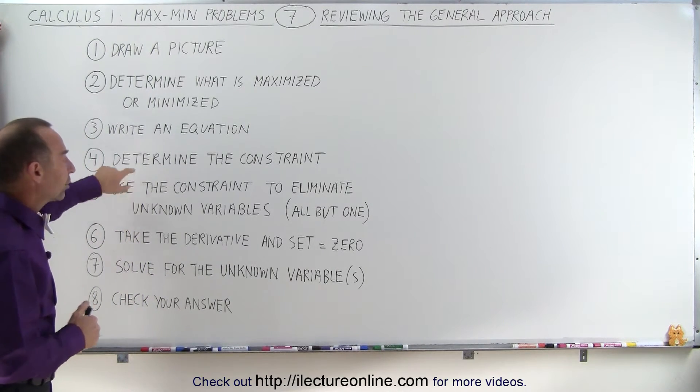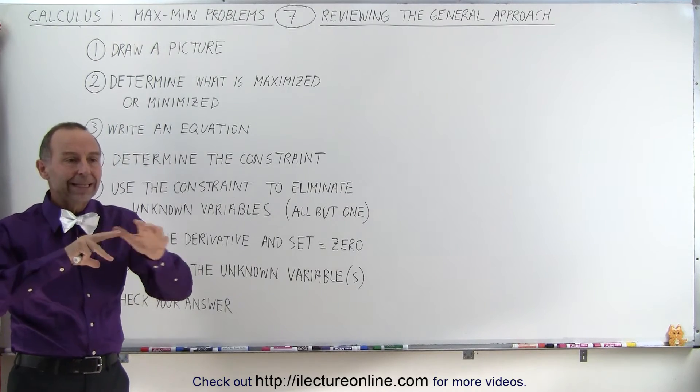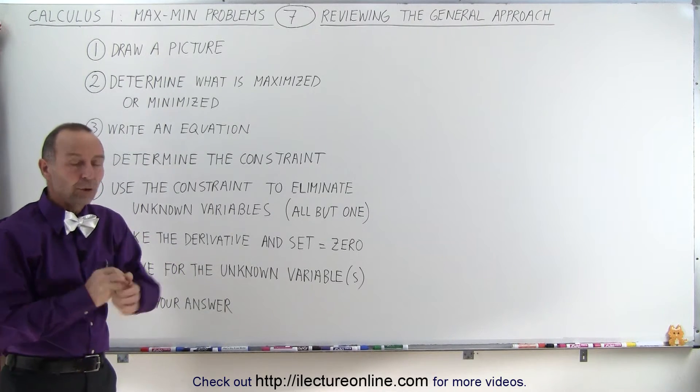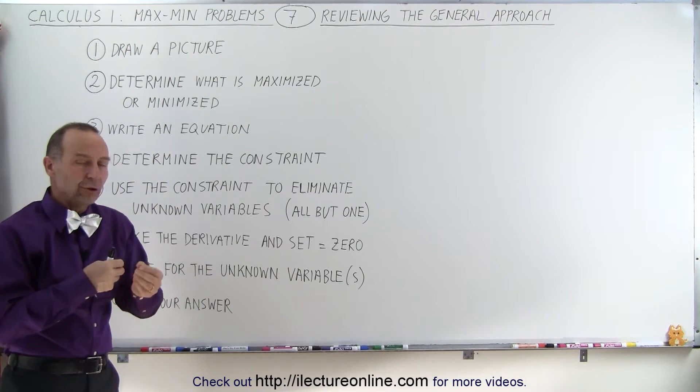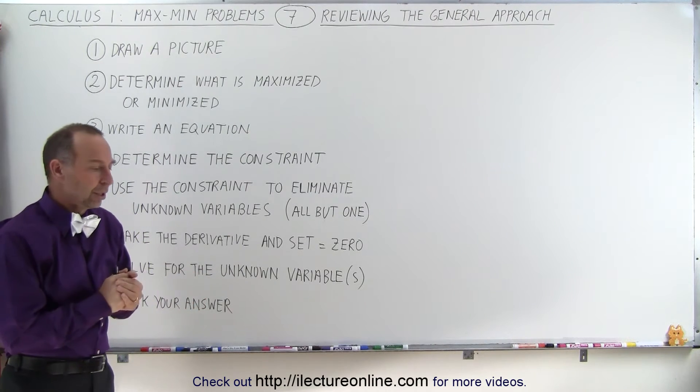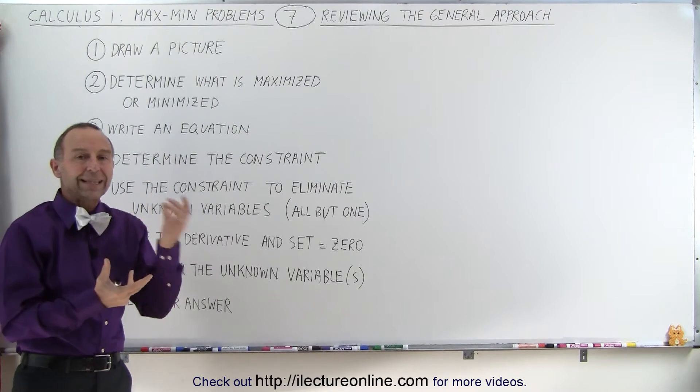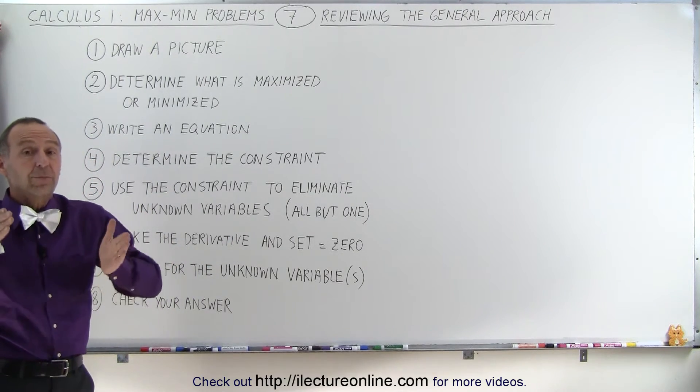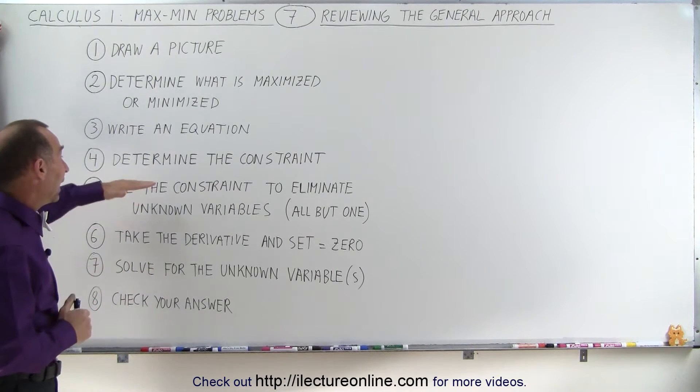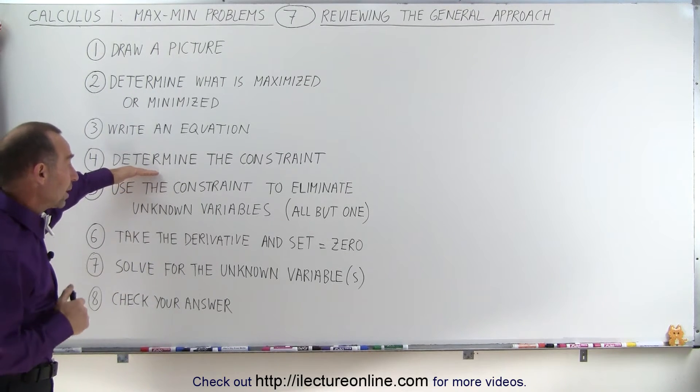And then you need to determine the constraint. Usually there's some limitation on the problem. You only are allowed to use this much material. There's a certain amount of cost for the material. There's a certain ratio between the length to width and the height and things like that. Those are your constraints by which the problem needs to abide.